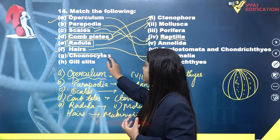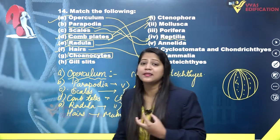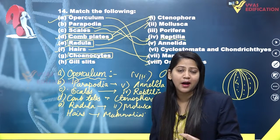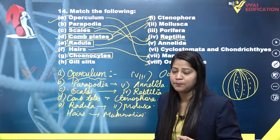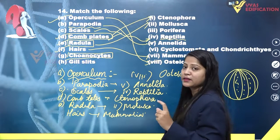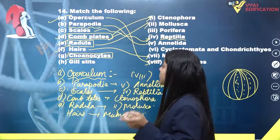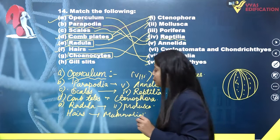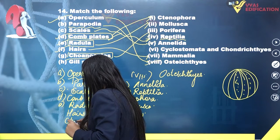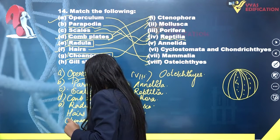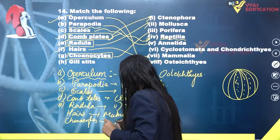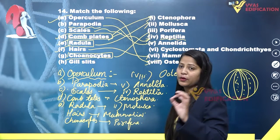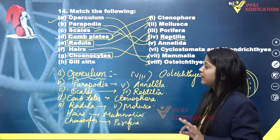Choanocytes are the special characteristic cells present in the members of Porifera, the phylum of animal kingdom. Choanocytes are the characteristic cells found in members of Porifera, so this will match with the third option, Porifera.